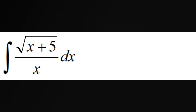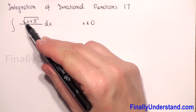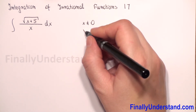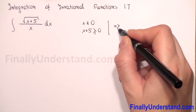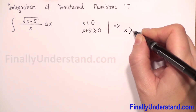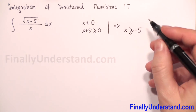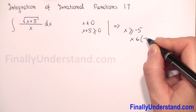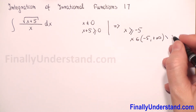We have an integral of an irrational function. We know that we cannot have 0 in the denominator, and under the square root we must have an expression greater than or equal to 0. So x plus 5 must be greater than or equal to 0, which means x must be greater than or equal to negative 5. And because x must be different from 0, our domain is the interval from negative 5 to positive infinity, excluding 0.